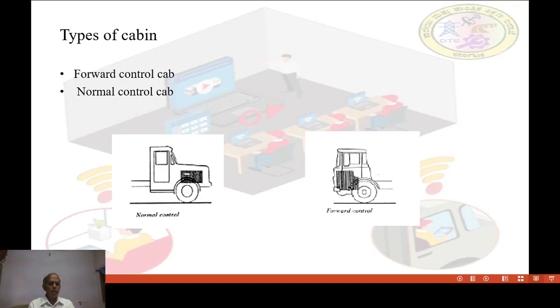The normal control cabin, as shown in the figure, in normal control cabin, vehicle engine is located in front of driver's cab. It gives more floor space in cabin and it will give less noise, less heat and easy entry and exit for the drivers and others.